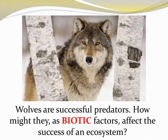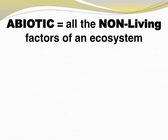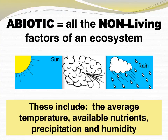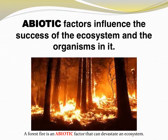Wolves are very successful predators. How might they, as biotic factors, affect the success of an ecosystem? Abiotic factors include the average temperature, available nutrients, precipitation, and humidity, and a lot more. Abiotic factors influence the success of an ecosystem and the organisms in it. A forest fire would certainly devastate an ecosystem.